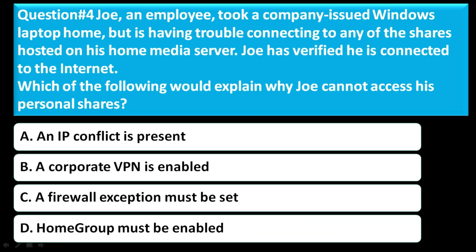Question number 4: Joe, an employee, took a company-issued Windows laptop home but is having trouble connecting to any of the shares hosted on his home media server. Joe has verified he is connected to the internet. Which of the following would explain why Joe cannot access his personal shares? Option A is an IP conflict is present, Option B is a corporate VPN is enabled, Option C is a firewall exception must be set, Option D is a home group must be enabled. The correct answer is Option D — home group must be enabled.